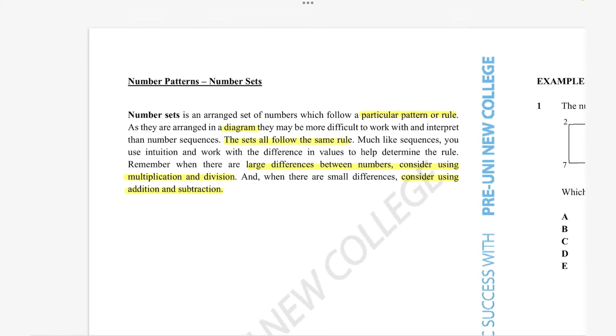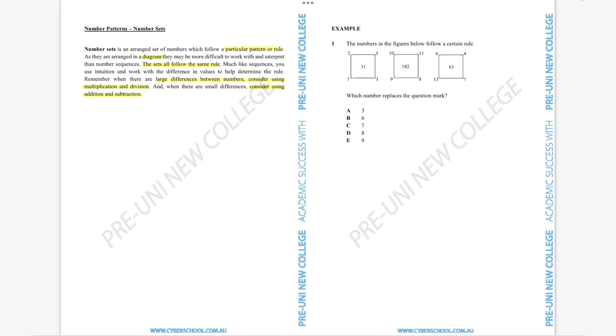So number sets as a question type is basically like an extension of number sequences. Both of them use the same kind of concept. You need to figure out what the pattern is just by looking at the clues that you are given. And whereas in number sequences, the clues were in the format of sets of numbers, in this scenario, they are a bit more challenging because these numbers are provided in a form of a diagram, kind of like how we see in the example question here.